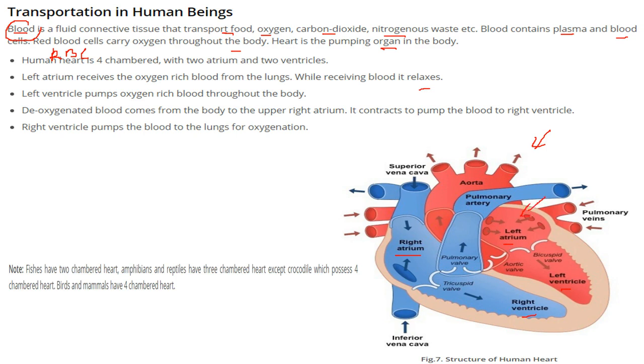The left atrium receives the oxygen-rich blood from the lungs. While it is receiving the blood, it is relaxing.